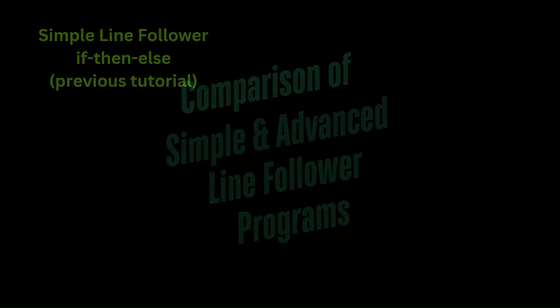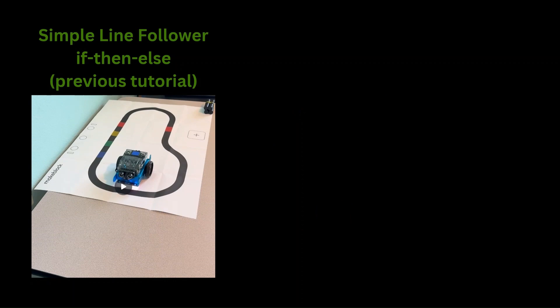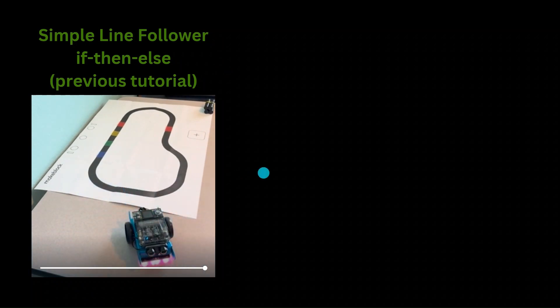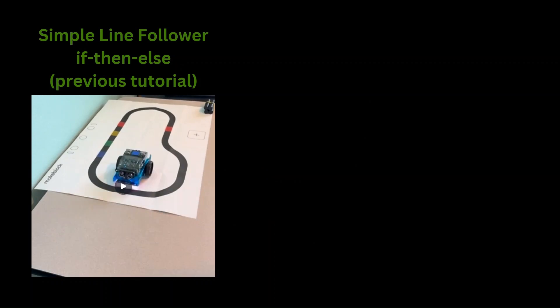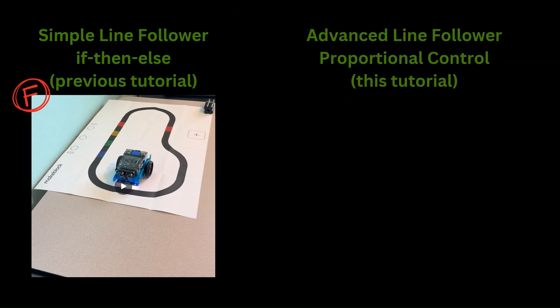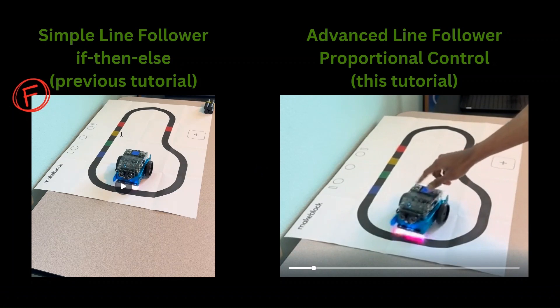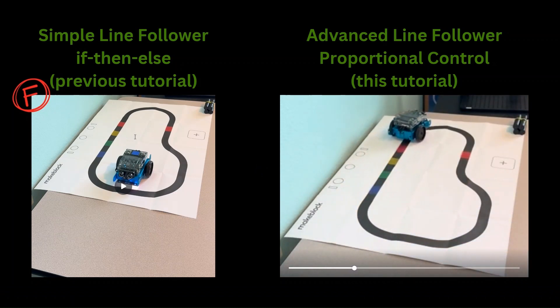I want to show you another scenario where the simple line follower program completely fails, but the advanced line follower does a great job. Let's see what the simple line follower does when you start the program with the robot off the line but perpendicular to it. The simple line follower fails to start tracking the line and goes completely off the sheet — it cannot command a stronger correction for a larger deviation, so we'll call that a fail. Now testing the same case with the advanced line follower, we see a much stronger correction being applied, and the robot does a great job of starting and continuing to track the line.